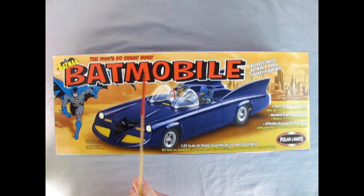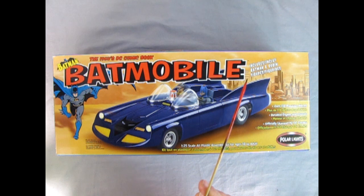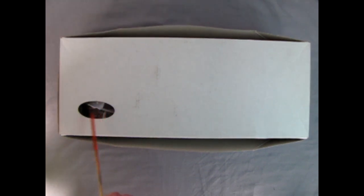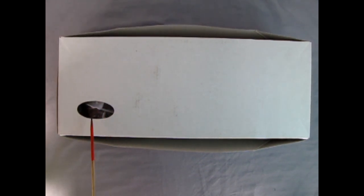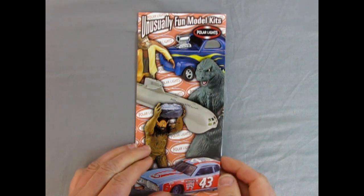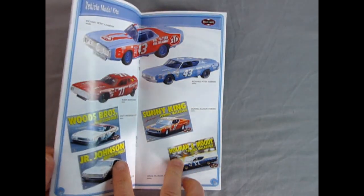The 1960s DC comic book Batmobile includes Batman and Robin figures, over 110 precision pieces, detailed engine and chassis, officially licensed by DC Comics. This model is a 125th scale, all-plastic assembly kit for ages 10 to adult. One thing that was cool about these older Polar Lights kits is that they offered this transparent window on the bottom of the box so that you could see what color the plastic was inside. Another great addition was this really awesome little collector's book showing you all the different model kits that came out in that year from Polar Lights.